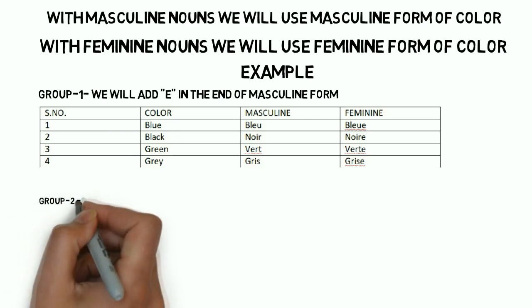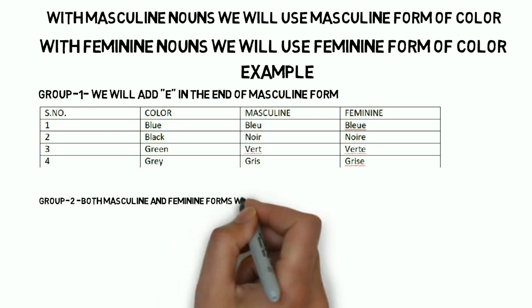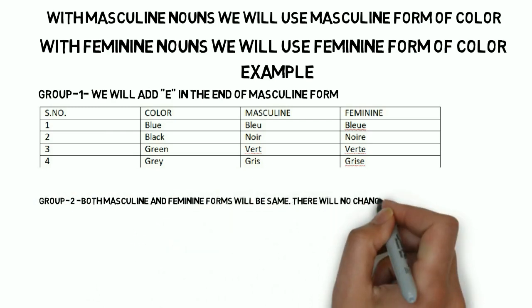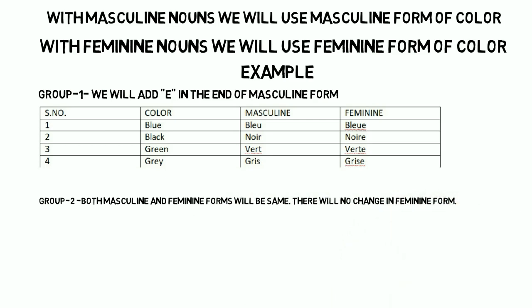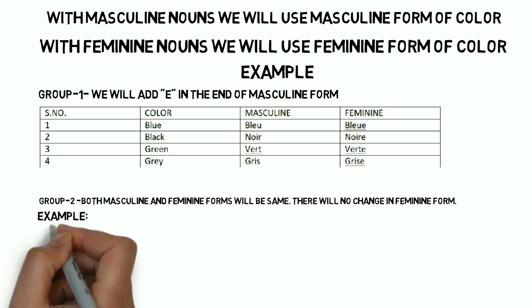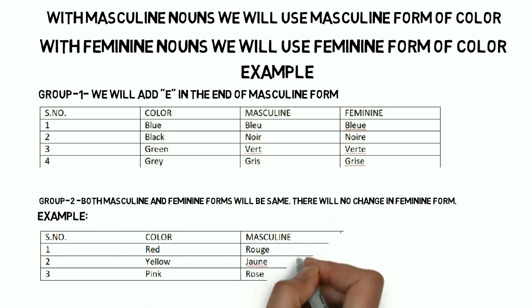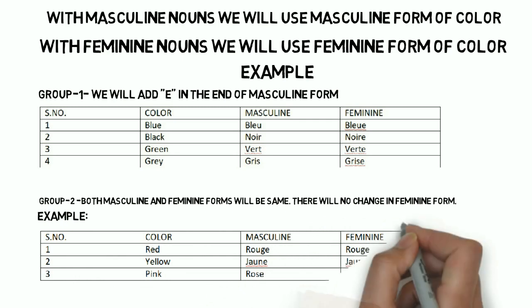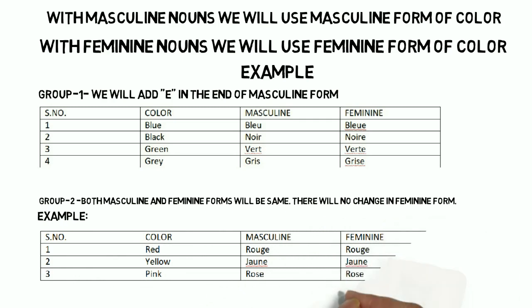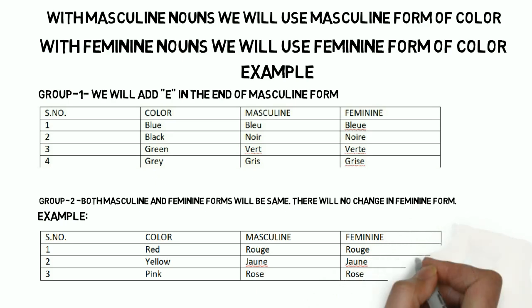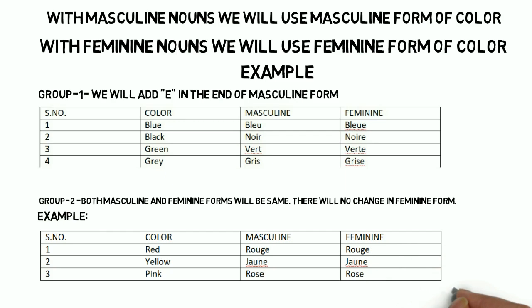Now there is another group of colors which are the same in masculine and feminine form — because there is already an 'e' in the masculine form, so when we make the feminine form, we will not change the spelling. For example, rouge — rouge is red, and it is already ending with 'e', so the feminine form is the same. Second color is yellow — yellow in French is jaune. The masculine form already has an 'e', so the feminine spelling remains the same. Third color is pink — pink in French is rose. It is also ending in 'e', so no changes are made for the feminine form.